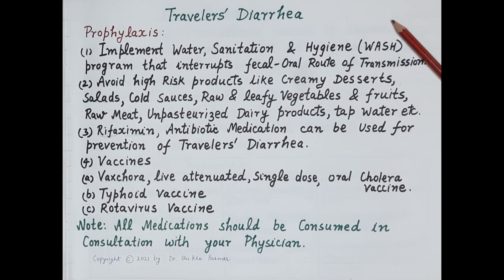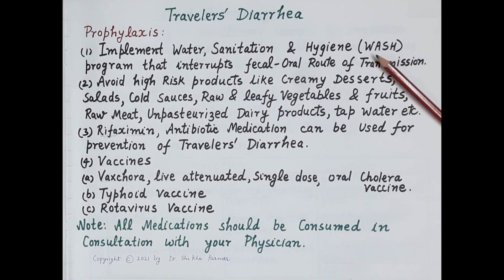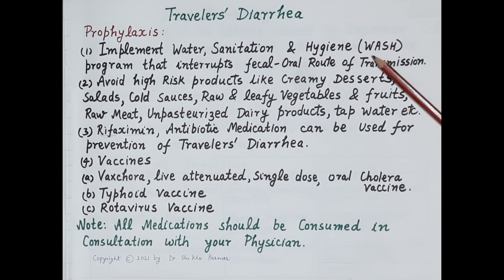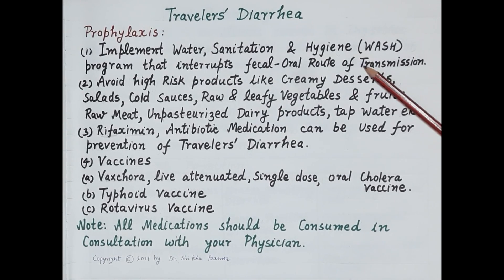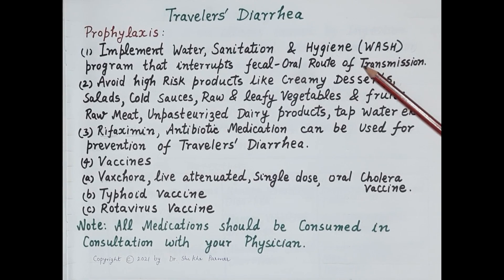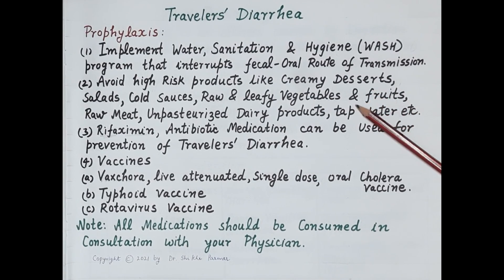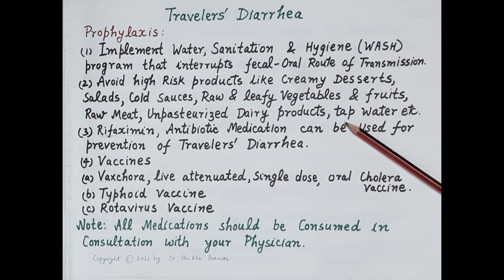Regarding prophylaxis and prevention: the majority of diarrheal diseases can be prevented by implementation of water sanitation and hygiene — the WASH program — aiming at interrupting the fecal-oral route of transmission. Frequently washing hands with soap or alcohol-based hand sanitizers and clean water, especially after using toilets and before preparing or eating food, is very important. Avoid high-risk products like creamy desserts, salads, cold sauces, raw and leafy vegetables, fruits, raw meat, unpasteurized dairy products, and unclean tap water.